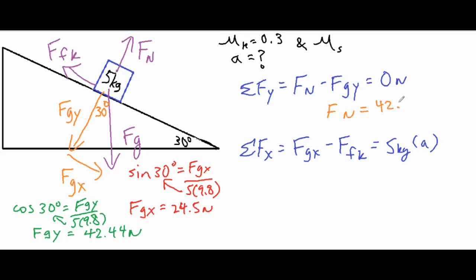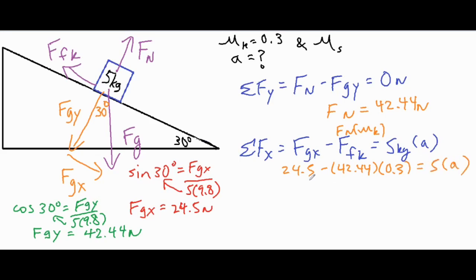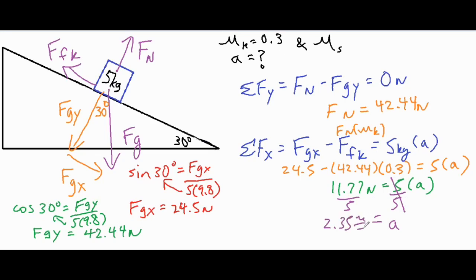So fn equals 42.44 newtons. That's significant because the normal force times the coefficient of kinetic friction gives us our friction force. We have fgx at 24.5 minus 42.44 times the coefficient of kinetic friction of 0.3, and that equals five times a. That leaves us with 11.77 newtons equal to five times a. Dividing both sides by five gives us an acceleration of 2.35 meters per second squared.